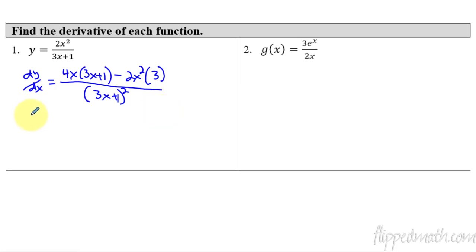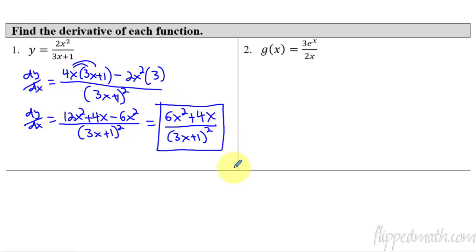And all of this over the denominator, 3x plus 1, squared. Let's simplify this a little bit, dy/dx is going to equal, we can distribute here, we'll get 12x squared plus 4x minus 6x squared, all over, now do not multiply the denominator out. I would recommend you just leave this as a nice, simple quantity squared, just like that. And then we can say that this equals, simplify this, and you have 6x squared plus 4x, all over 3x plus 1 quantity squared, and that's the answer. There's nothing else that's going to simplify here. That is the derivative of 2x squared over 3x plus 1.